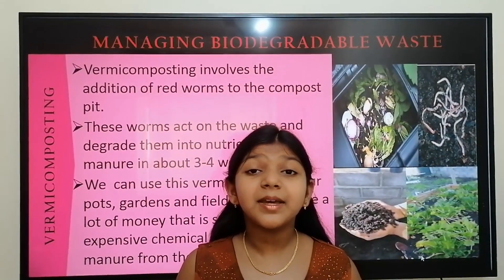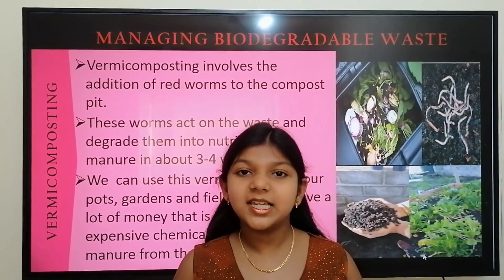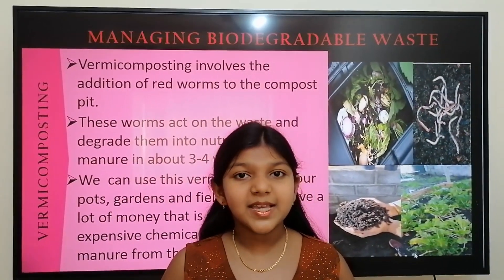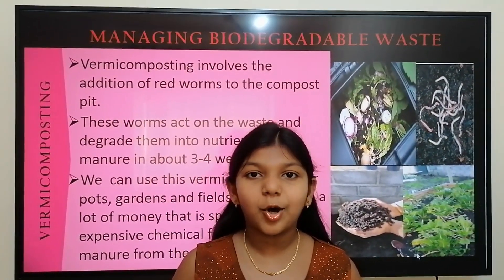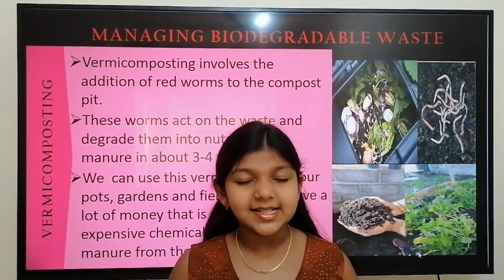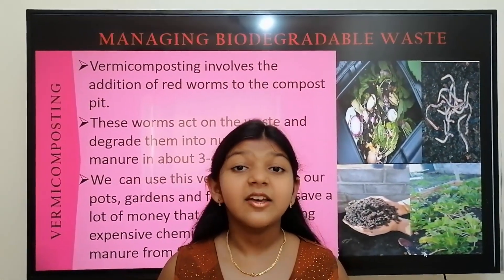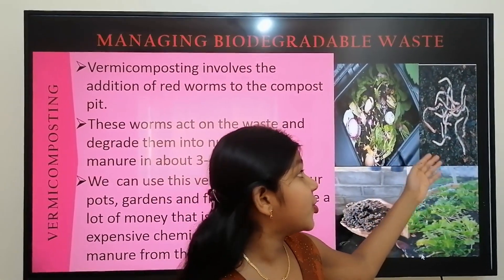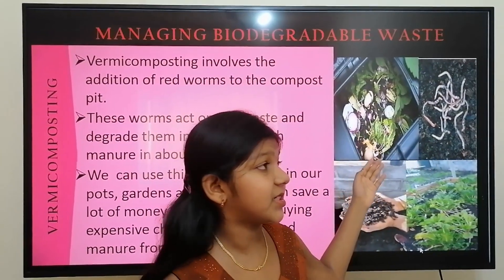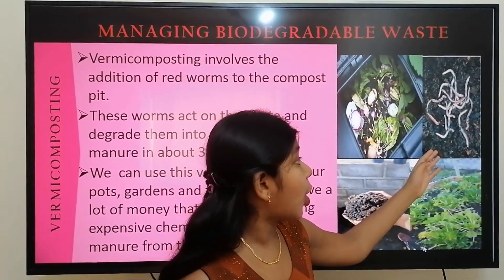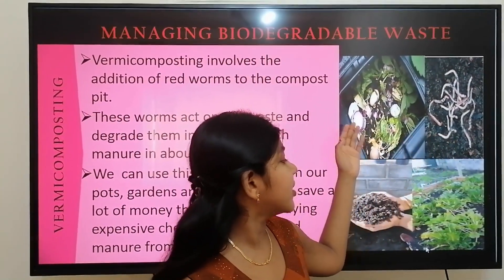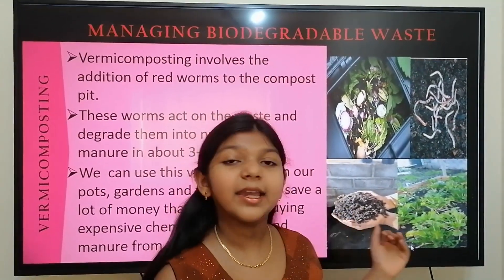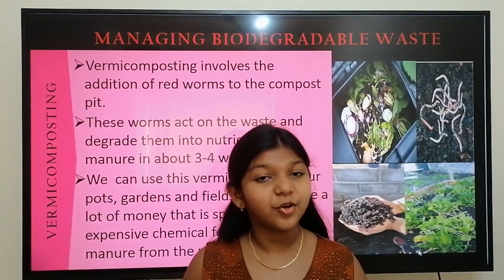An improved method over traditional composting is vermicomposting. It is basically the decomposition of organic materials by red worms. Vermicomposting involves the addition of red worms to the compost pit. These worms act on the waste and change it into nutrition-rich manure in about three to four weeks.